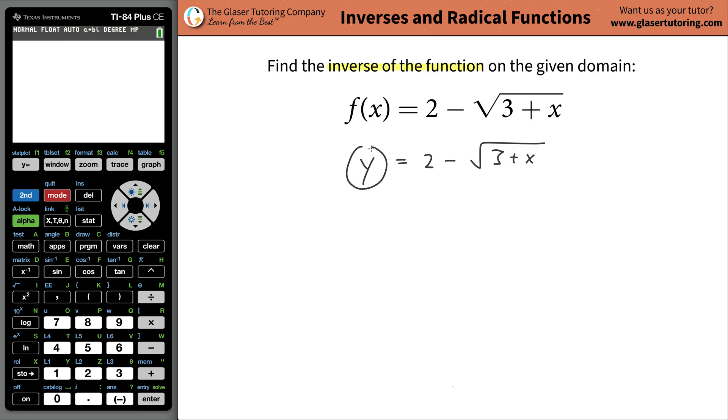Then what I'm going to do is everywhere I have an x, excuse me, y, I'm going to write an x and everywhere I have an x, I'm going to write a y. So this becomes an x. Two minus then radical three plus y.